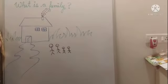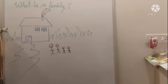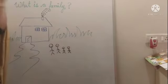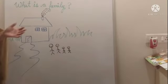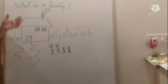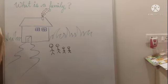Hello dear students. Today in this video we are going to study about the family and its types. So what is a family? A family consists of two or more people living together in the same house under the same roof.